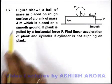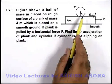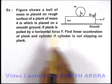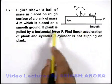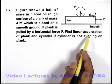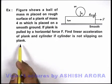In this example, figure shows a ball of mass m placed on the rough surface of a plank of mass 4m which is placed on smooth ground. If plank is pulled by a horizontal force F, we are required to find linear acceleration of plank and cylinder if cylinder is not slipping on plank.